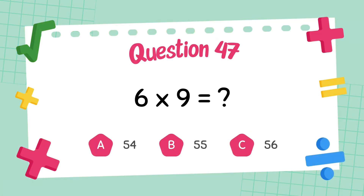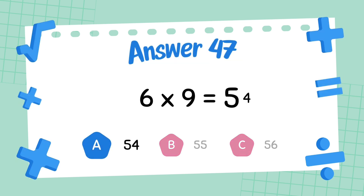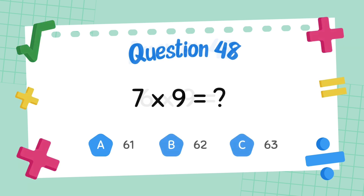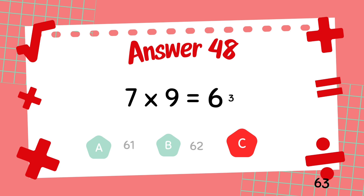What is 6 multiply 9? The answer is 54. What is 7 multiply 9? The answer is 63.